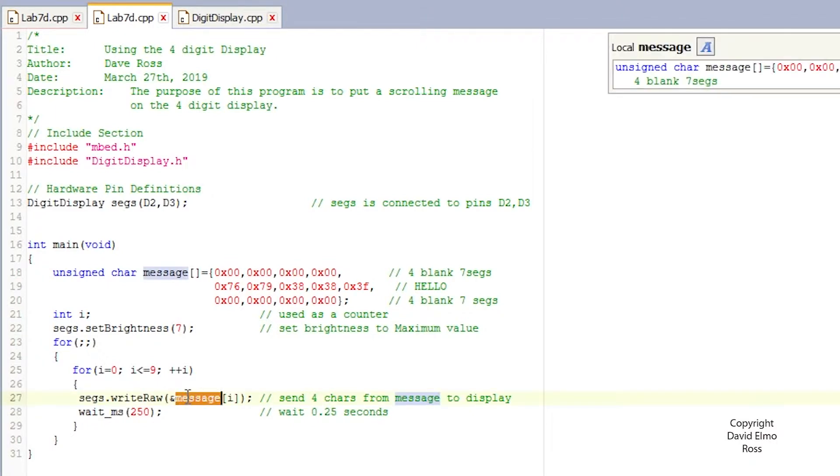And we put an ampersand in front and put an I here because we're going to go zero to nine. Why zero to nine? Because we want to start here and print four blanks. Then we want to go here, print three blanks, and then the first letter, which is H.